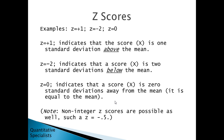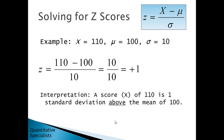So if you ever see a z of 0, that x value is simply equal to the mean. Note that while these examples use integers, you can also have non-integer z-scores, such as a z of negative 0.5. Next, let's take a look at some examples for solving for z, with our formula shown in the upper right-hand corner of the screen.